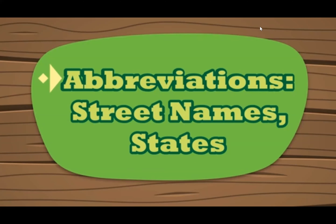All right, boys and girls. For English, this is for Thursday and Friday of the week of May 20th through the 24th. We're moving on — we've still been talking about some abbreviations, but now we're going to look at some street names and states. In the back of your English book there is a nice list of different abbreviations: calendar months, days of the week, titles like Doctor, Reverend, Mr., Mrs., and also street names like Road, Avenue, and Street.